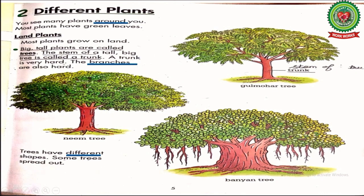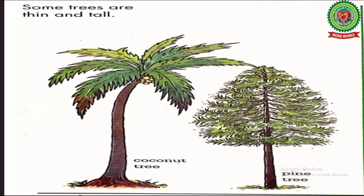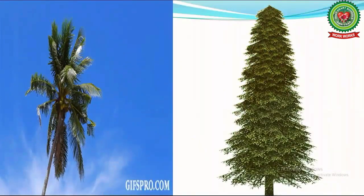Some trees spread out. As we know, trees are big in size and need more space to grow. Branches of some trees spread out or expand on all sides, like the banyan tree. Now children, open page number six. Some trees are thin and tall — as we discussed, trees are of different shapes and sizes. Coconut tree and pine tree are thin and tall trees.